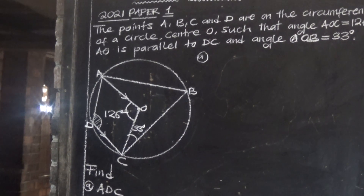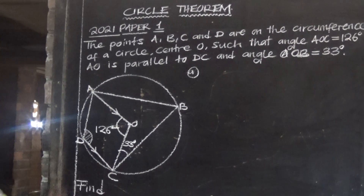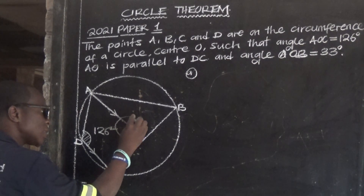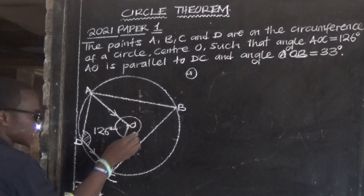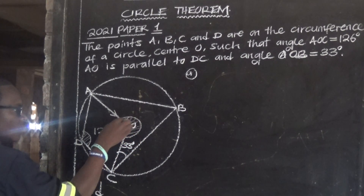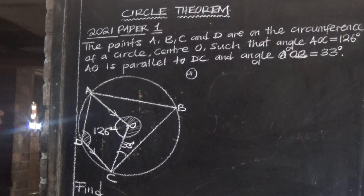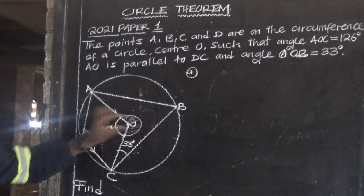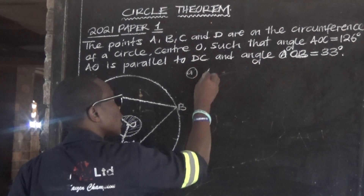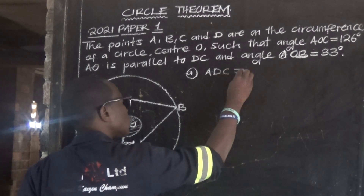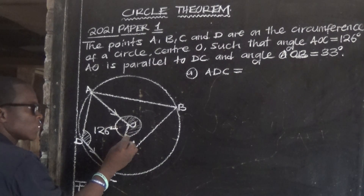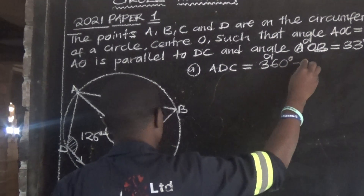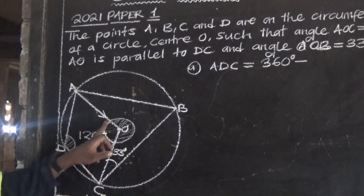You can use two methods to find angle ADC. You can first find the reflex angle on this side, then divide it by two to get this angle. So you find this reflex angle, then after finding it, you divide it by two.